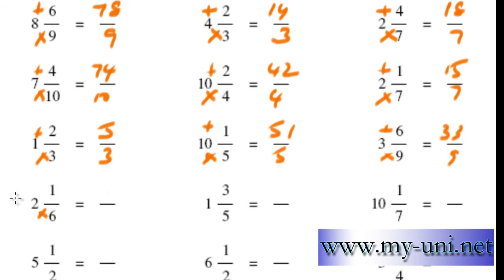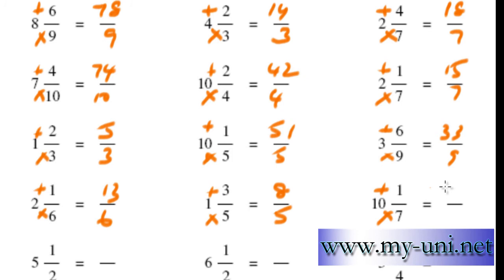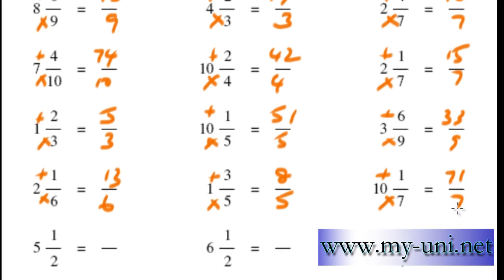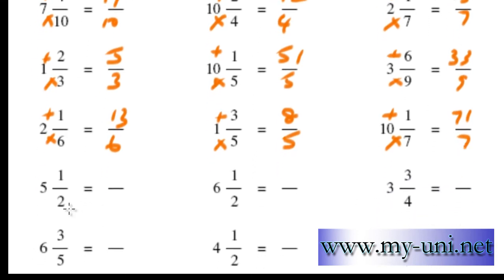6 times 2 is 12. 12 plus 1 is 13 over 6. 5 times 1 is 5, plus 3 is 8 over 5. 10 times 7 is 70. 70 plus 1 is 71 over 7. 5 times 2 is 10, plus 1 is 11 over 2.